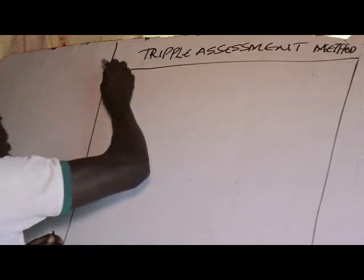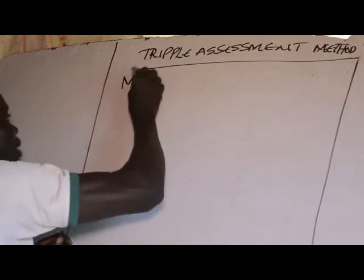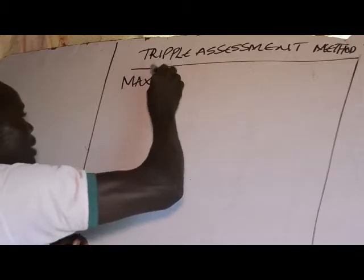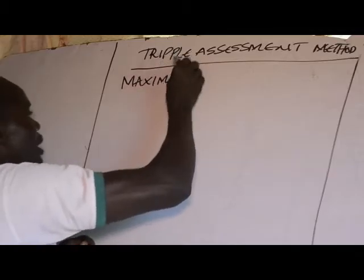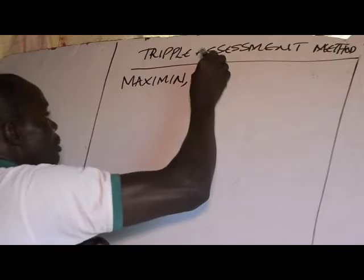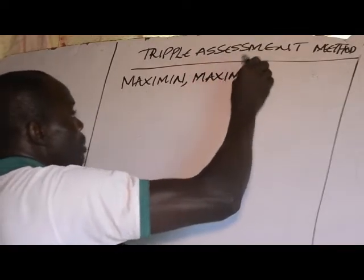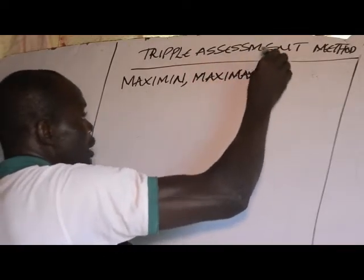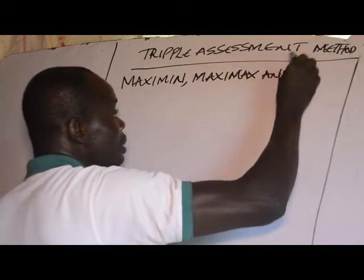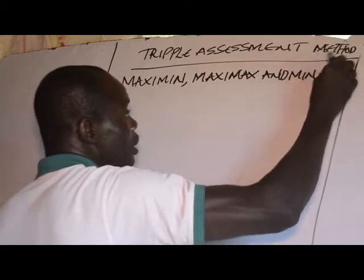We will be looking at three decision rules: Maximax, Maximin, and Minimax regret.